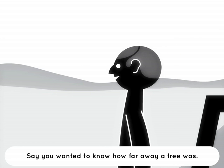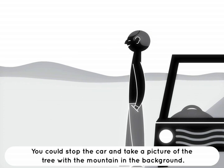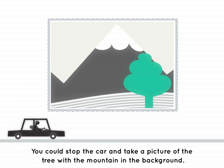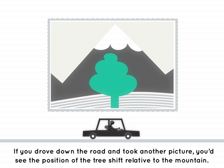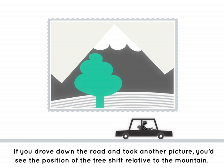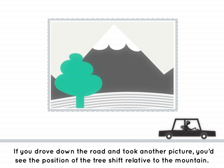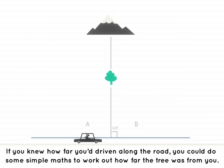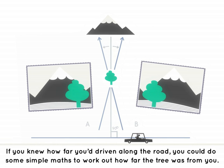Say you wanted to know how far away a tree was. You could stop the car and take a picture of the tree with the mountain in the background. If you drove down the road and took another picture, you'd see the position of the tree shift relative to the mountain. If you knew how far you'd driven along the road, you could then do some simple maths to work out how far the tree was from you.